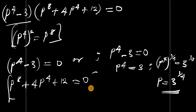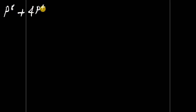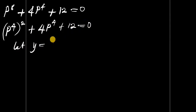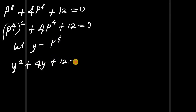Now we solve the other factor to find the remaining values of p. We have p to the power of 8 plus 4 times p to the power of 4 plus 12 equals zero. We rewrite p⁸ as (p⁴)², and let y equal p to the power of 4.